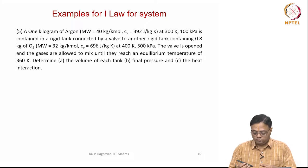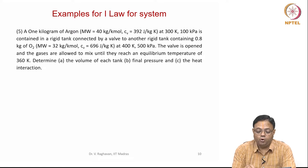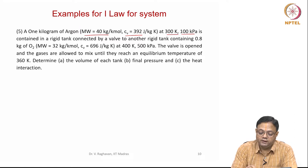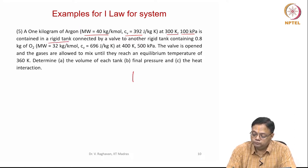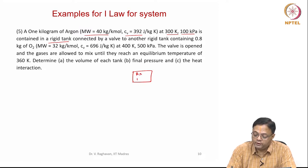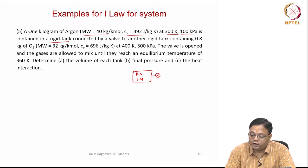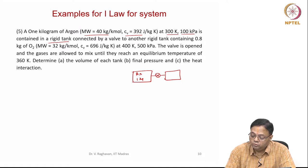The next problem: 1 kilogram of argon, molecular weight 40, Cv 392, at a temperature of 300 Kelvin and 100 kilopascals, is contained in a rigid tank. This is connected by a valve to another rigid tank where 0.8 kg of O2 is present.